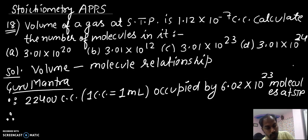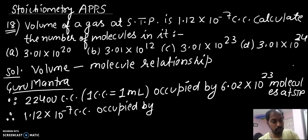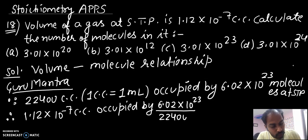So therefore, for 1.12 × 10^-7 cubic centimeter, number of molecules will be 6.02 × 10^23 divided by 22,400 multiplied by 1.12 × 10^-7.